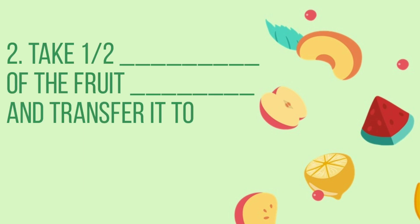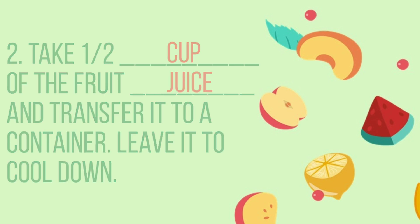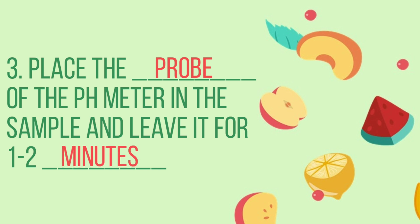Number 2: Take one half blank of the fruit blank and transfer it to a container. Leave it to cool down. The answers are cup and juice. Number 3: Place the blank of the pH meter in the sample and leave it for 1 to 2 blank. The answers are probe and minutes.